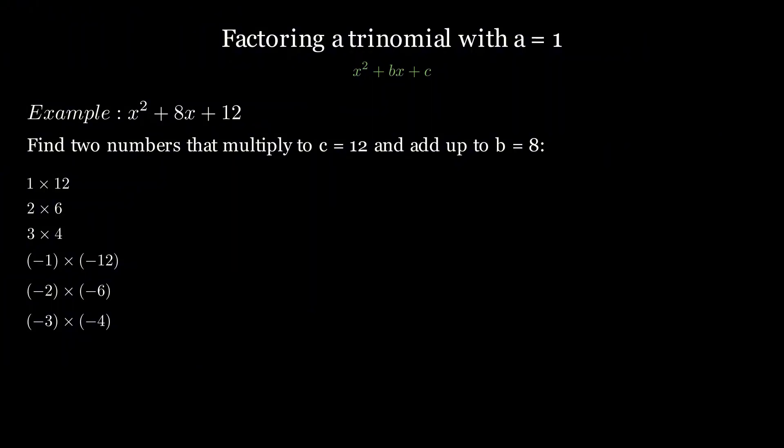and their negative pairs: negative 1 times negative 12, negative 2 times negative 6, and negative 3 times negative 4. Now, if we add them up, we see 1 plus 12 equals 13, 2 plus 6 equals 8, 3 plus 4 equals 7,